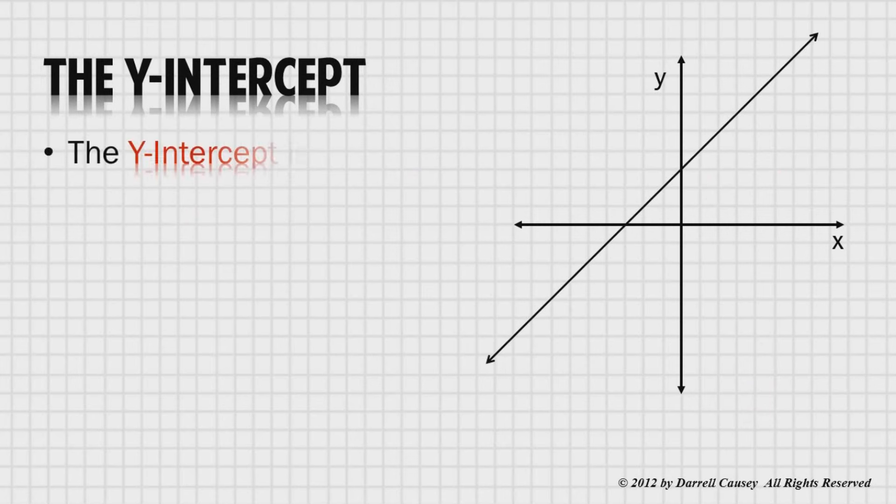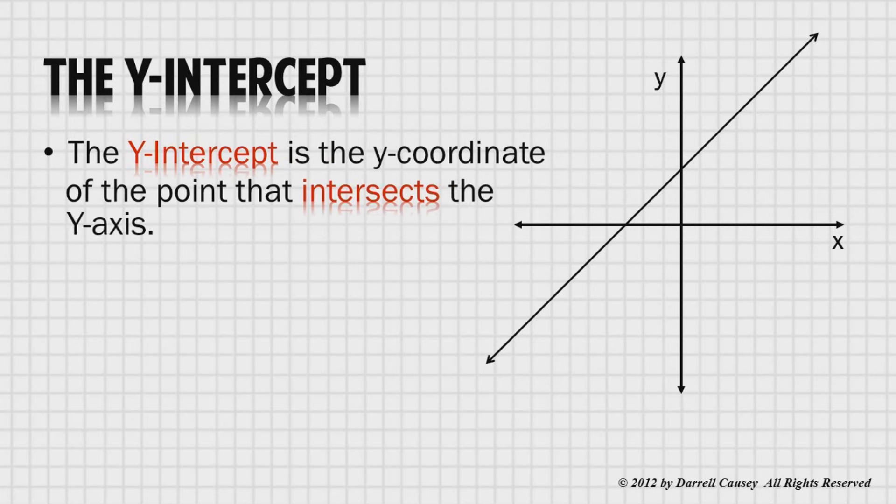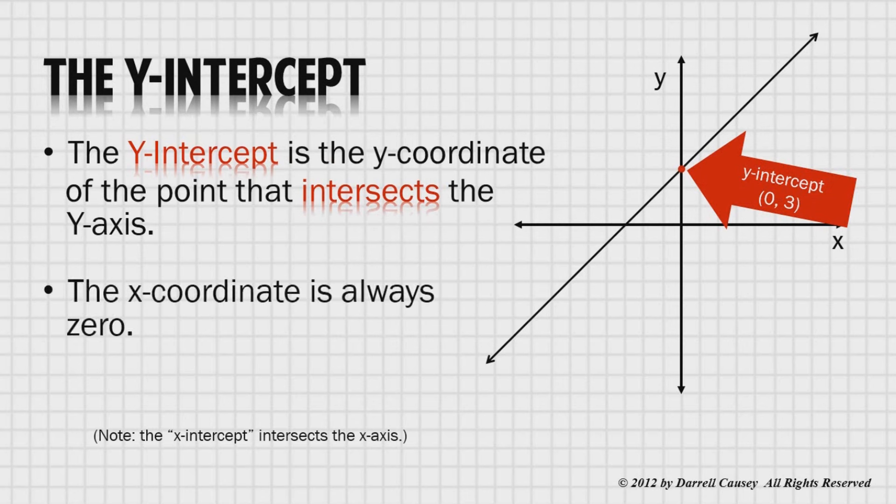The y-intercept is the y-coordinate of the point that intersects the y-axis, and its x-coordinate is always zero. Finding the y-intercept is easy, but don't let that fool you. It is very important.